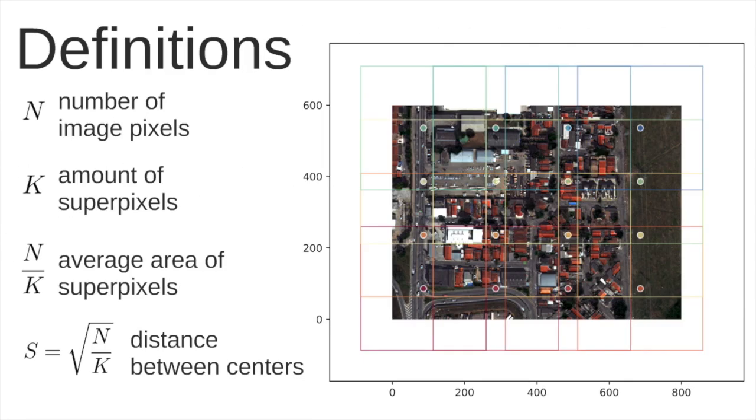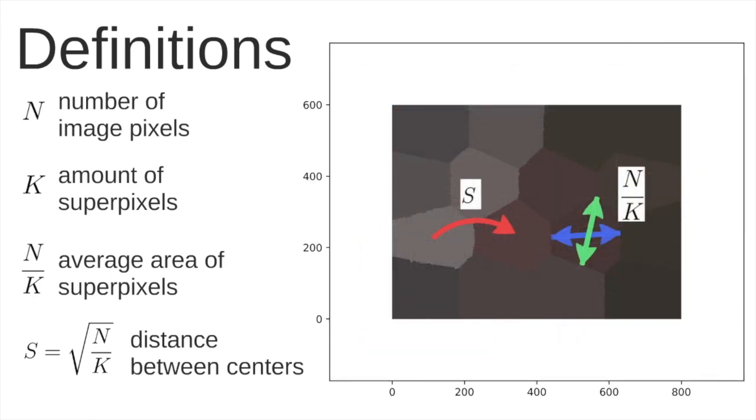Some basic definitions. Suppose that we have this image here with three channels. N is the number of image pixels and we want to create K superpixels. Suppose that in this case here we have 1, 2, 3, 4 up to 16. So K is equal to 16 in this case. The output of the SLIC algorithm will be something like this. A definition of super regions or superpixels. All these regions here are considered different superpixels. They are independent from each other.